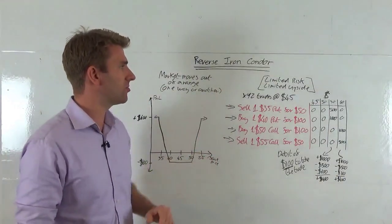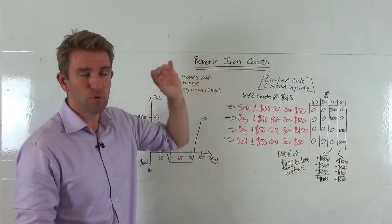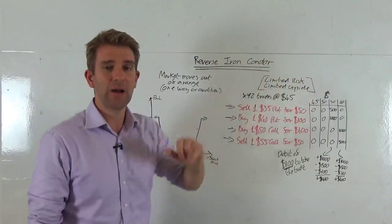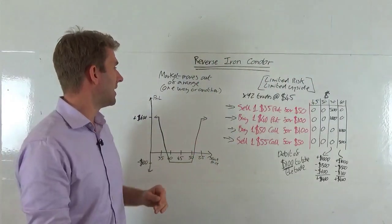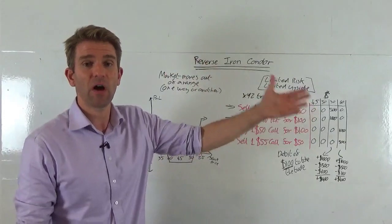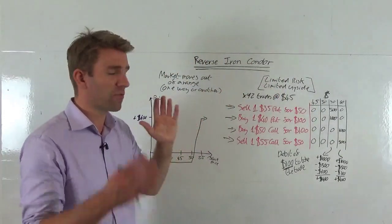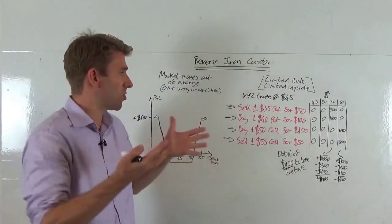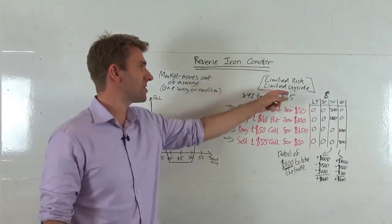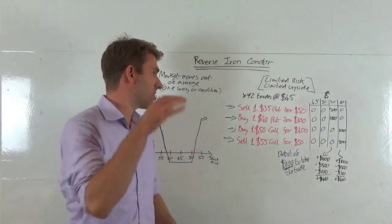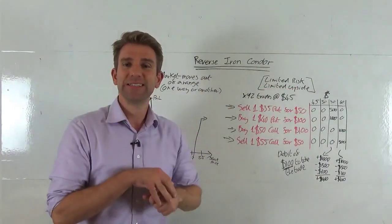So that's the reverse iron condor. Use it when we think the market's going to move outside of a range, expire outside of that range, and we just don't know the direction — just that it's going to move either higher or lower. You can use a narrow or wide range depending on how much you want to pay. It's limited risk with limited upside. That's the reverse iron condor — take care, see you next time.